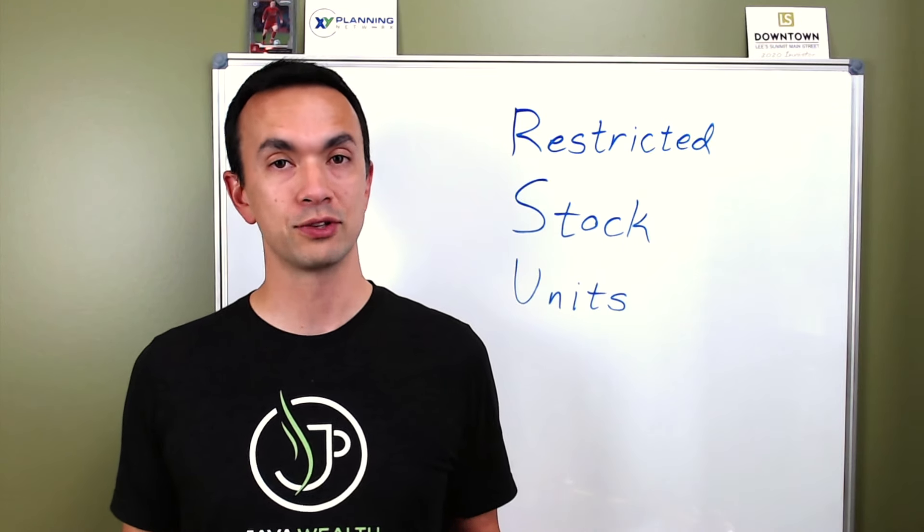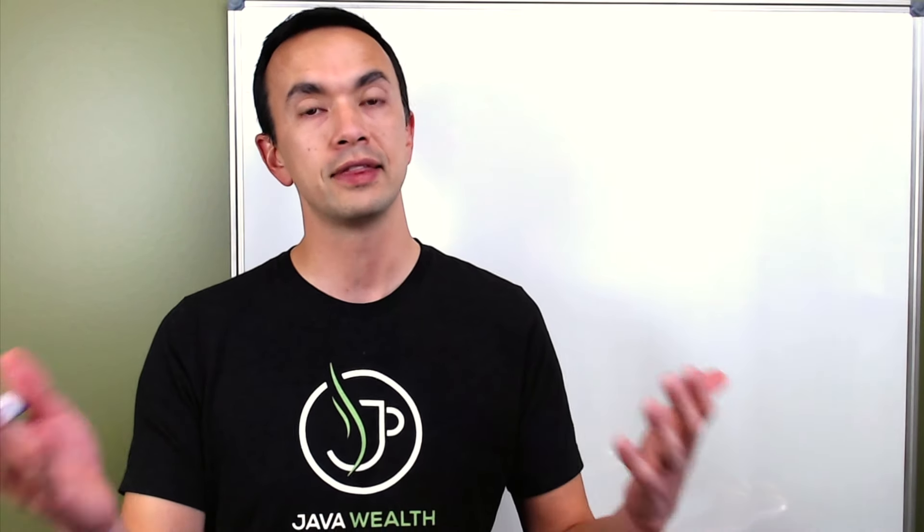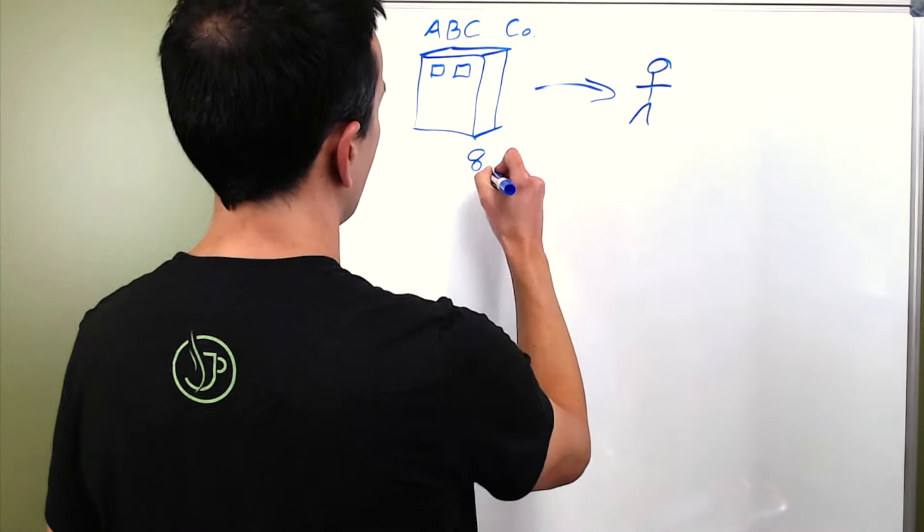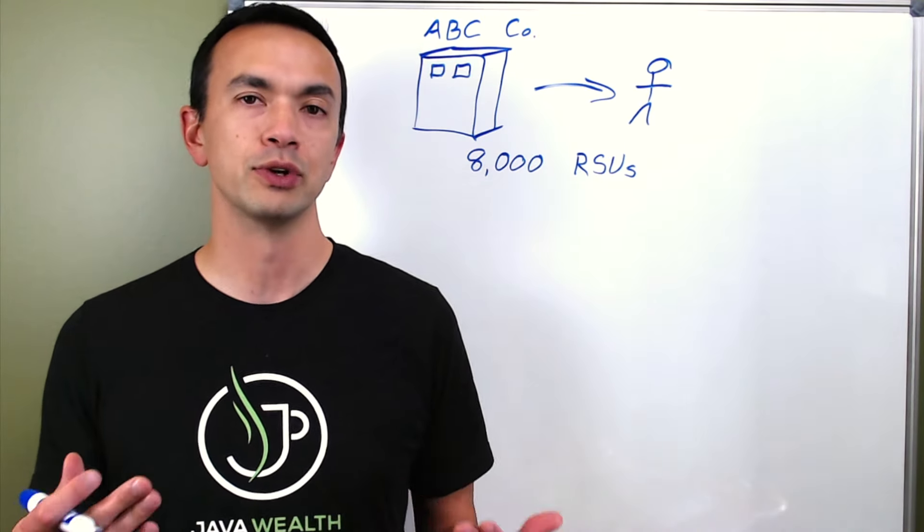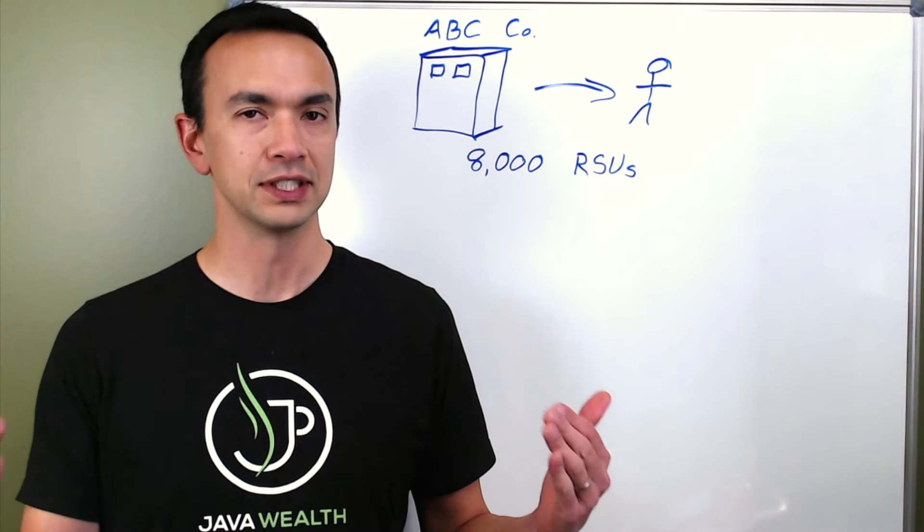So let's do this through an example. Let's say that you've just started a new job, and you're working for ABC company, and then ABC company has said, hey, as a bonus for you coming on, then we are going to grant you 8,000 RSUs in the company. And then in this example, let's say that the restriction is that it's going to be on a four-year graded vesting schedule.